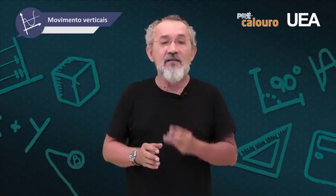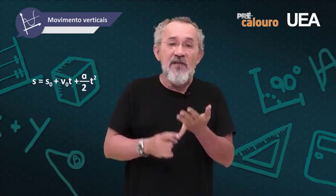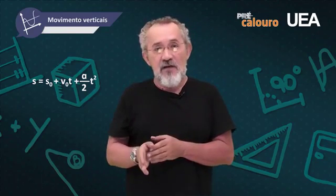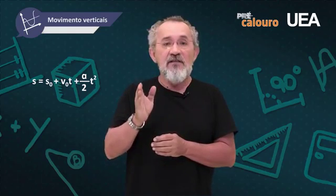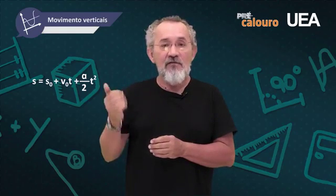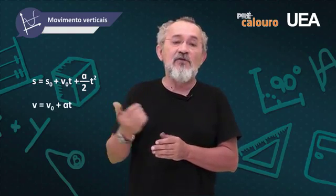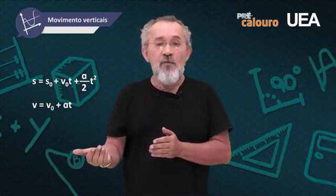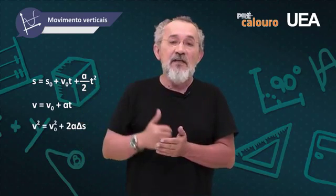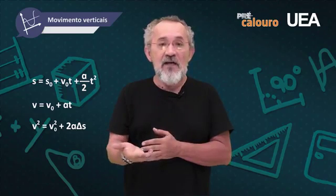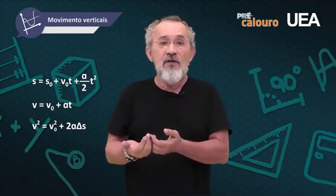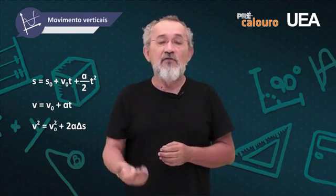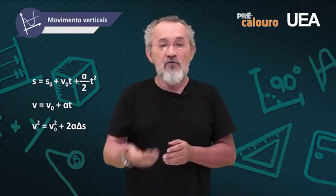As três equações são: primeira, a função horária do espaço — S = S₀ + V₀t + (a/2)t². Segunda, a função horária da velocidade — V = V₀ + at. Terceira, a equação de Torricelli, aplicável aos movimentos uniformemente variados e independente do tempo — V² = V₀² + 2aΔS.